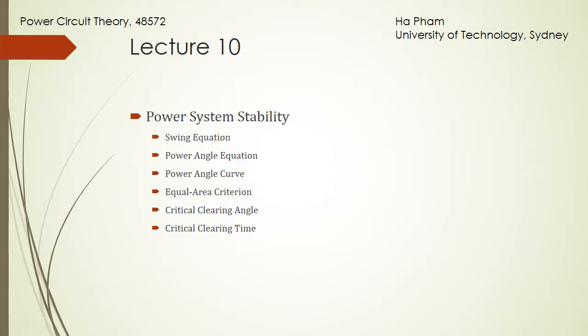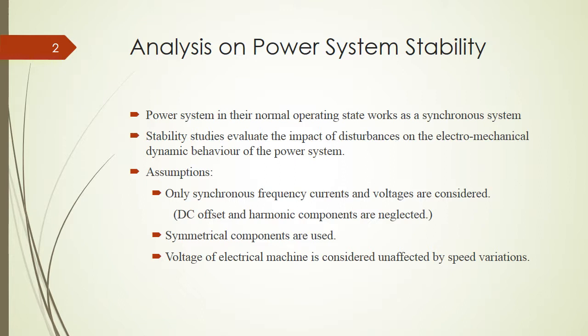The power system in their normal operating state works as a synchronous system. For example, in our daily life we work with 50Hz electricity, so everything in our system has to synchronize with the 50Hz. If you're at the sending end, the generator will rotate and output 50Hz electricity. If you're at the receiving end, you also receive that 50Hz. If we connect something in the middle, let's say a new load or a new generator or motor, it should be able to synchronize with the system.